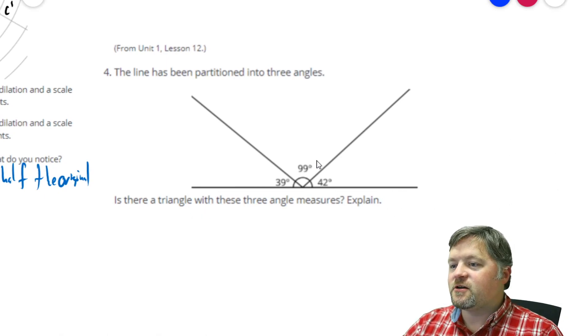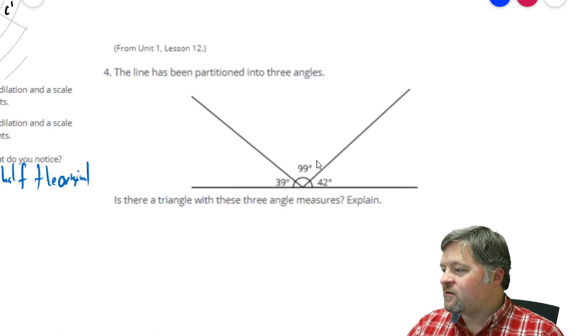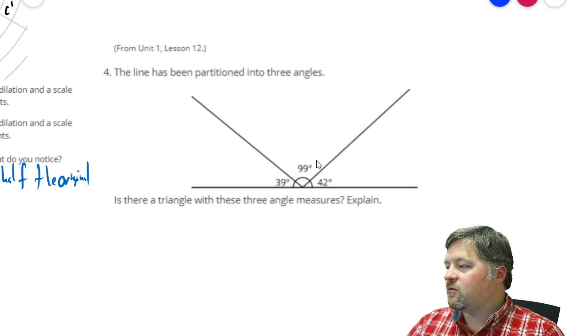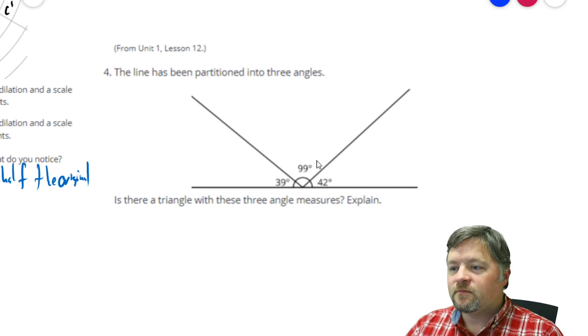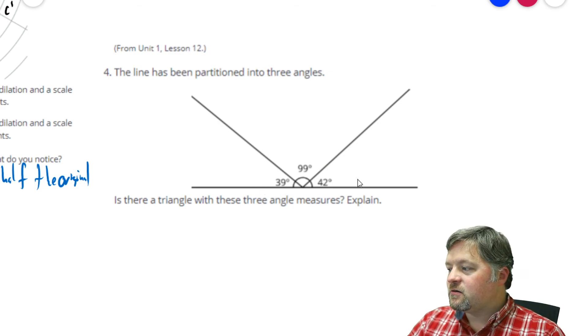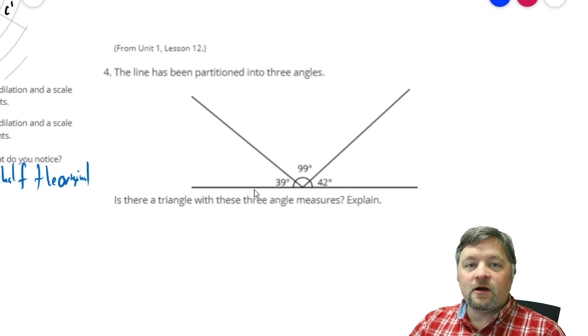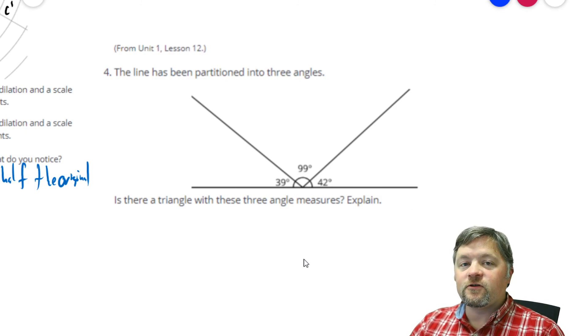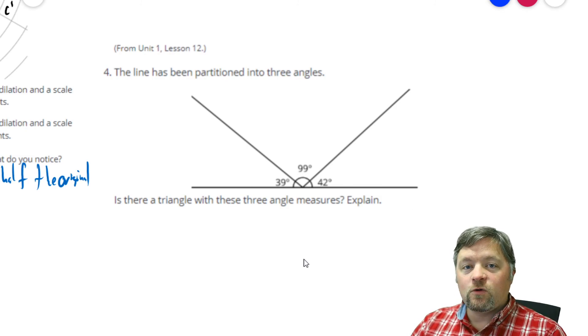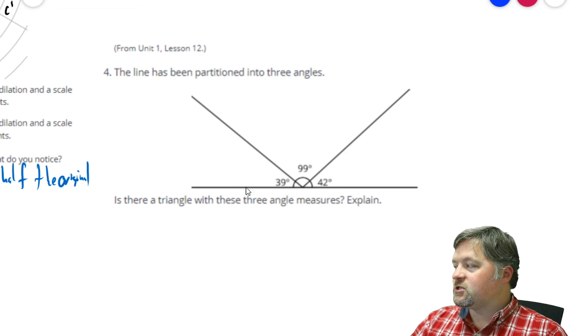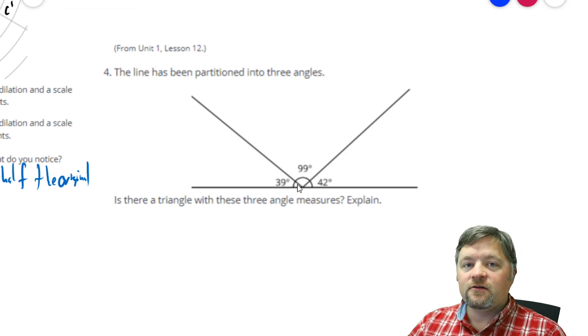Next, the line has been partitioned into three angles. Is there a triangle with these three angle measures? Well, these three angles, 39, 99, 42. If that is a line, those three angles have to have a sum of 180 degrees. And, the sum of every triangle is 180 degrees. Which means these three angles have to make a triangle.